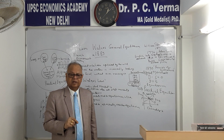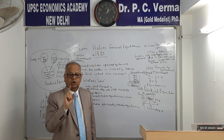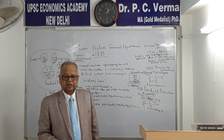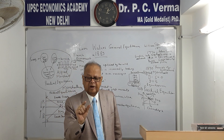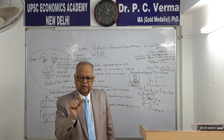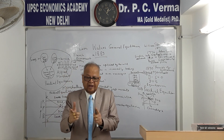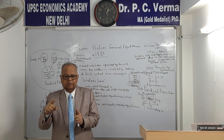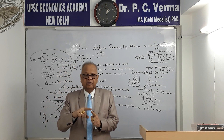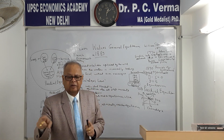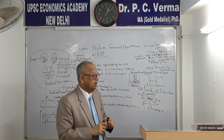Walras, a French economist, says that general equilibrium means there can be equilibrium in the commodity market — that is a single market — but at the same time there must be equilibrium in the factor market, there must be equilibrium in the Y market, there must be equilibrium in the Z market. There are many commodities.